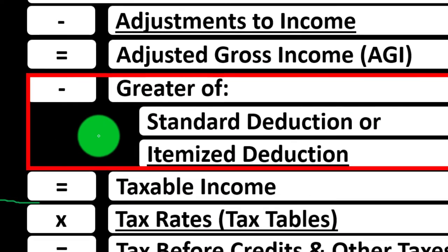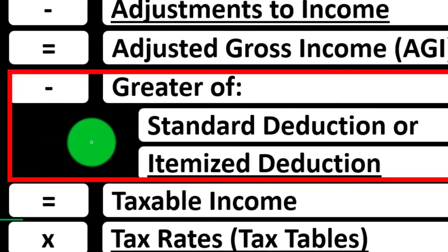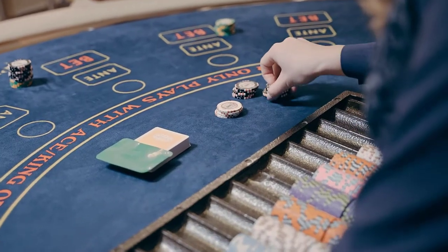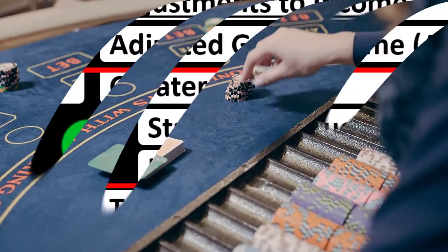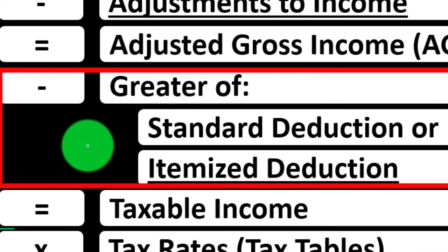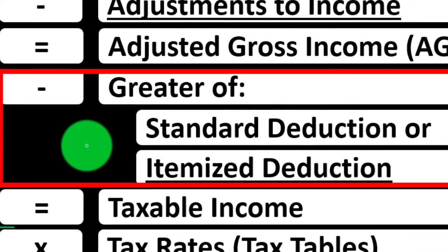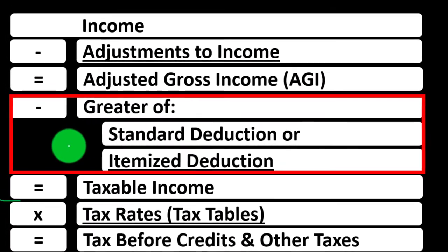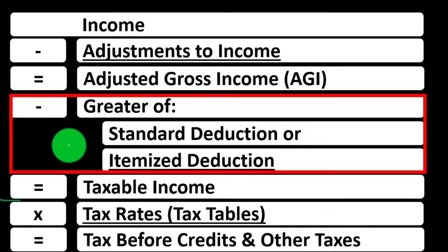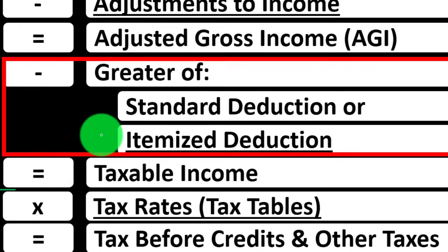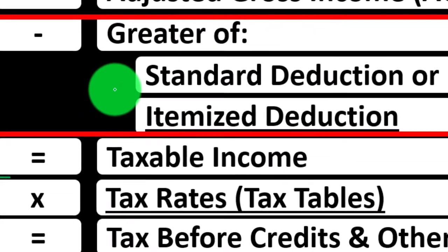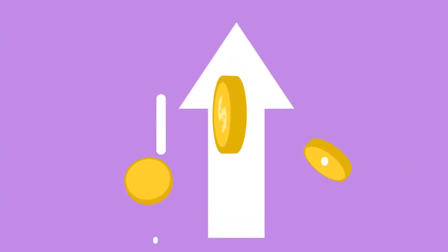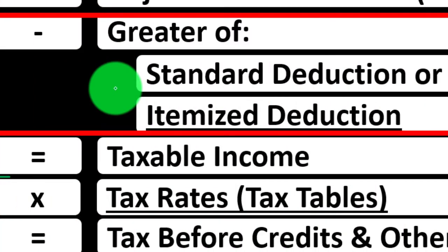So that means the deductions are good, which is kind of weird, because usually expenses from a normal sense are bad. But here, the expenses — those being the deductions — are good. We want the higher deduction. So if the standard deduction is higher than the itemized deduction, we're going to take the standard deduction. A couple of years ago, they actually increased the standard deduction, and that made it so a lot fewer people are going to itemize.